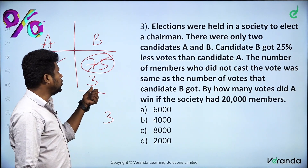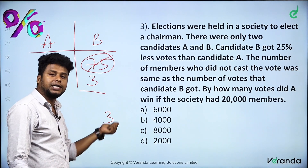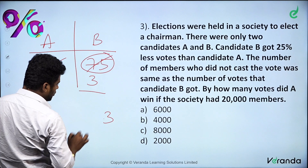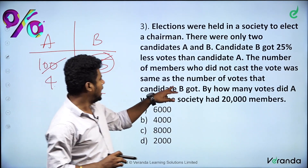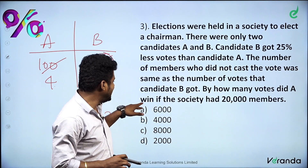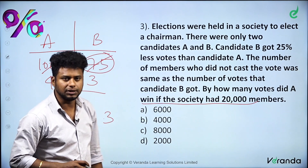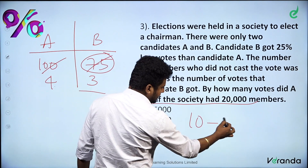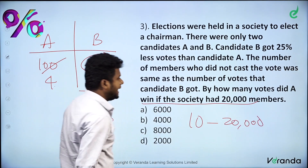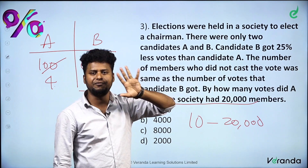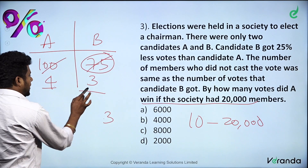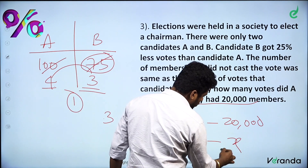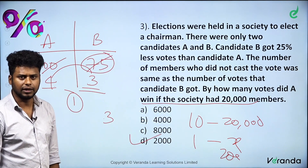So you write: A gets 4 parts, B gets 3 parts, non-voters are 3 parts. Total is 4 + 3 + 3 = 10 parts. How many votes did A win by if the society had 20,000 members? Total of 10 parts = 20,000, so 1 part = 2000. The difference between A and B is 1 part, so the answer is 2000. That is the simple way of solving this problem.